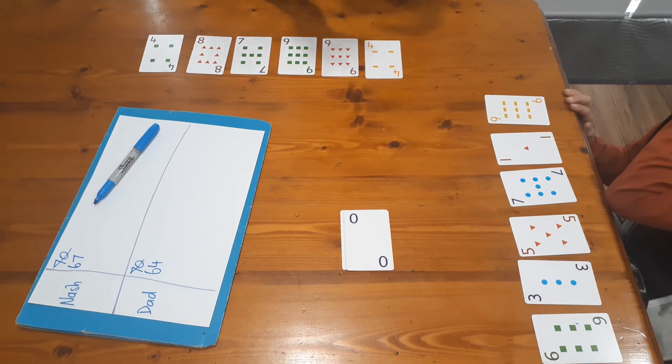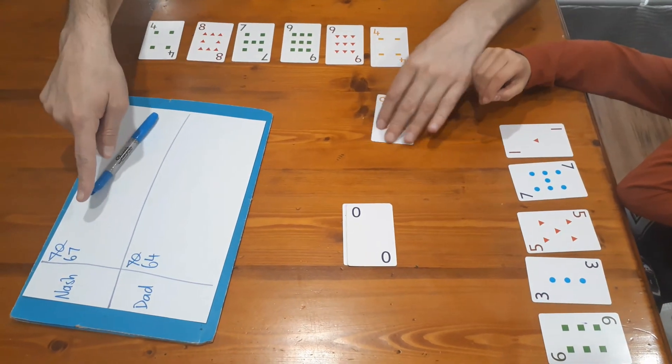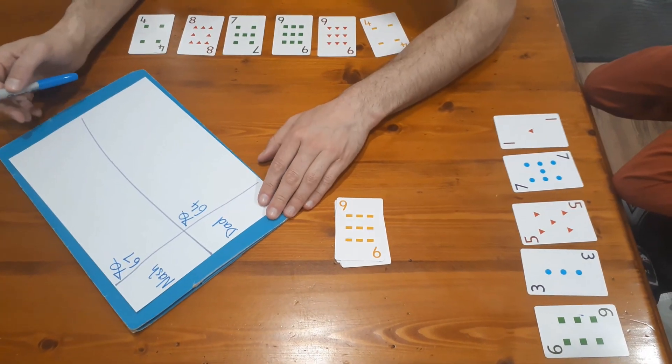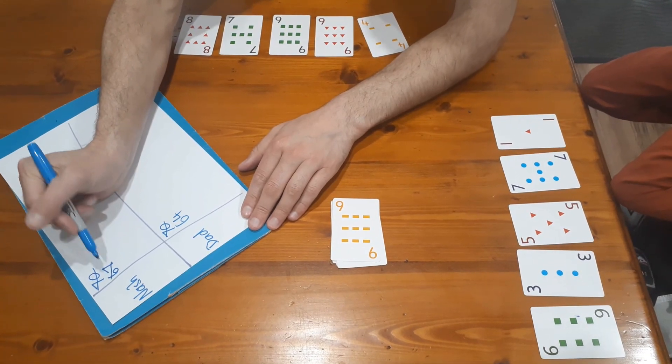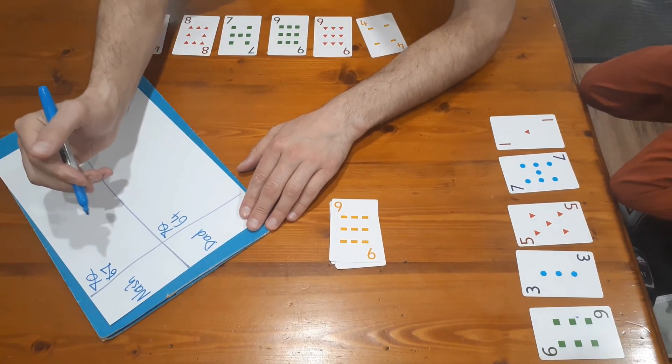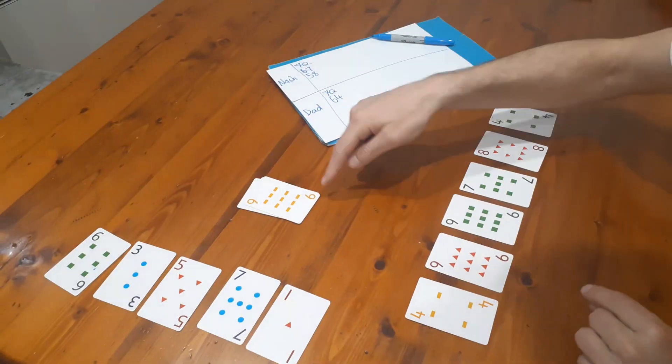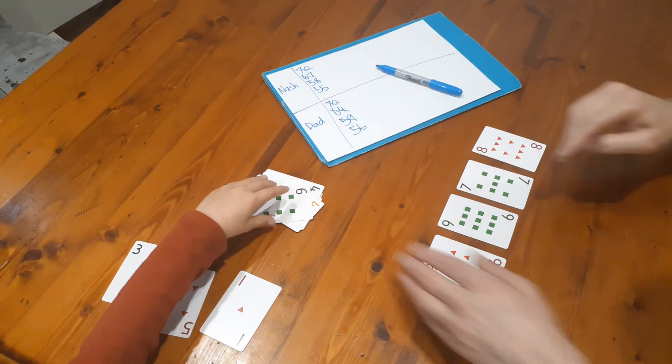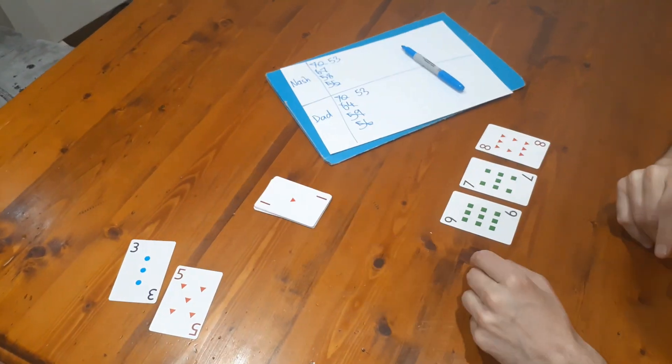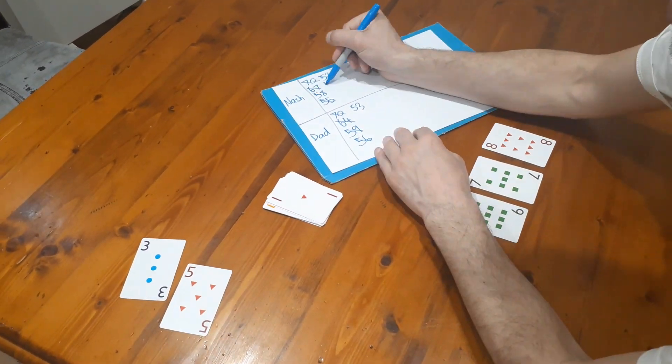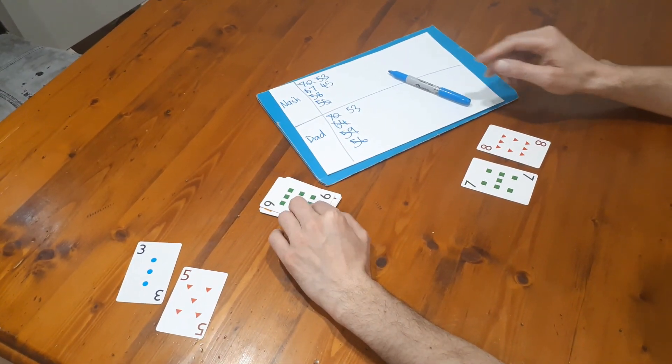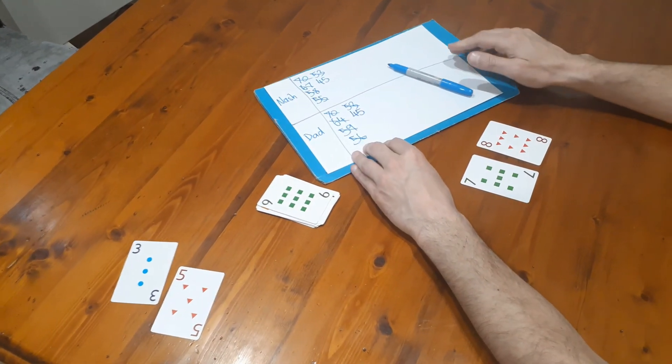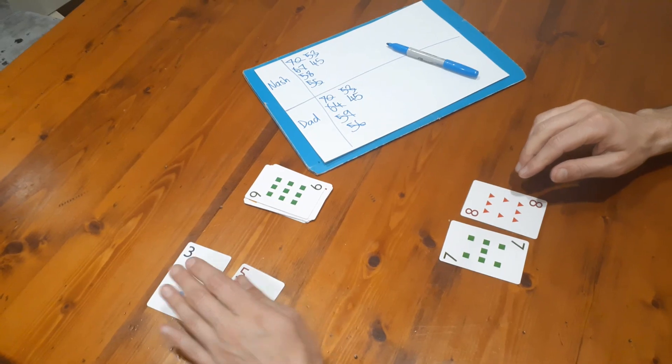I'll play the nine, so that's also a difference of eight. So I'm on 45 as well - we're both 10 off the target. All right Nash, your turn.